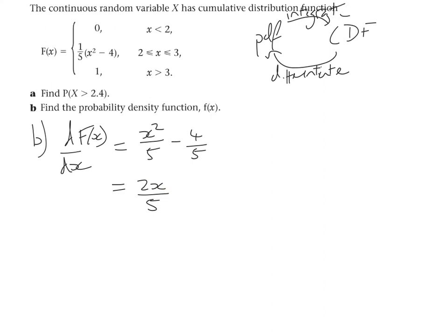So, we need to write what f(x) is. So, f(x) is 2x over 5, when x is between 2 and 3, and it is 0 otherwise.